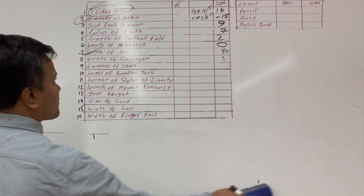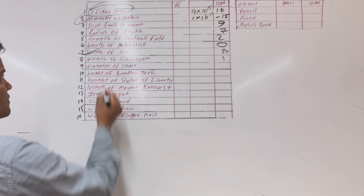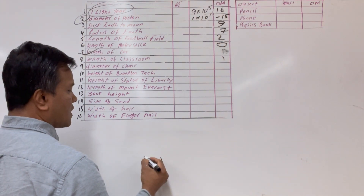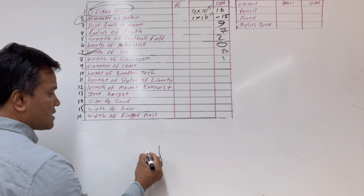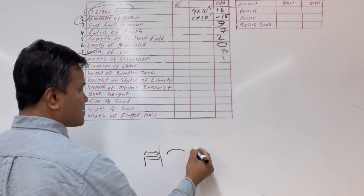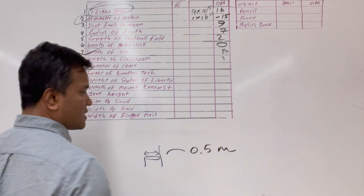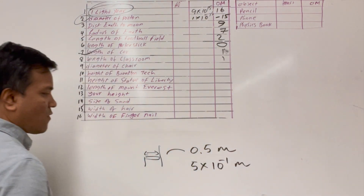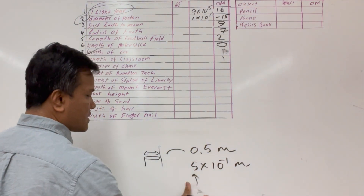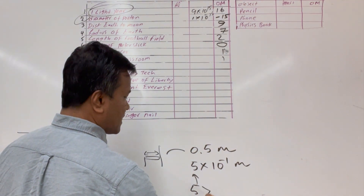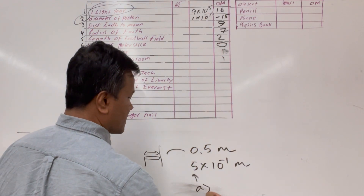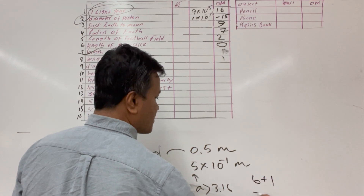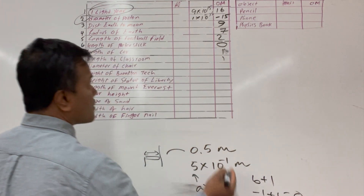The diameter of a chair is about 0.5 meters, which in scientific notation is 5×10⁻¹ meters. Since A equals 5 is greater than 3.16, B plus 1: negative 1 plus 1 equals 0. The order of magnitude is 0.